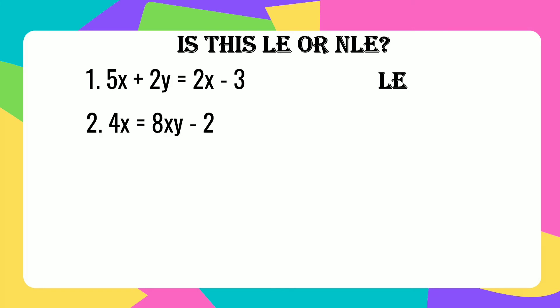Number 2: 4x equals 8xy minus 2. This equation is not a linear equation in two variables.